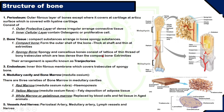Spongy bone is found at the extremities of the bone, and their arrangements are specific, known as trajectories. As seen in the picture, compact bone is thick at the diaphysis or shaft, while spongy bone is found at the extremities. Compact bone is rigid and hard in nature, whereas spongy bone acts as a sponge and contains trabeculae and trajectories.